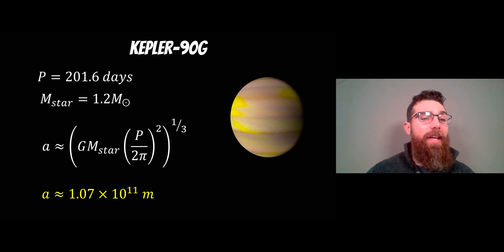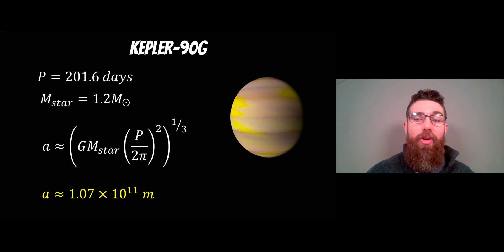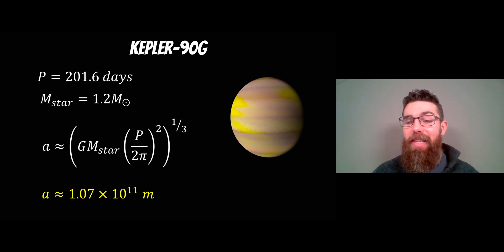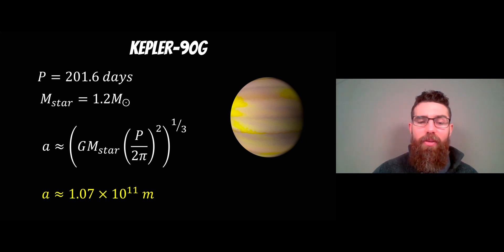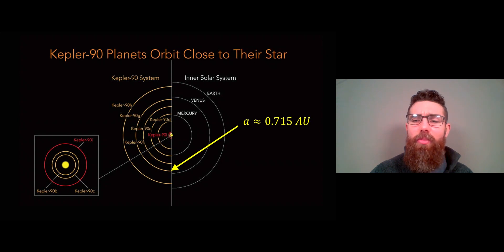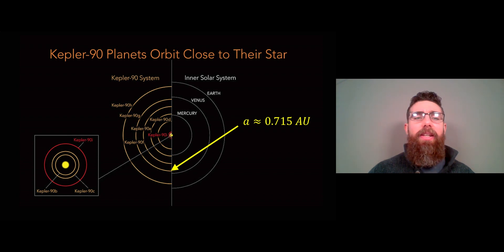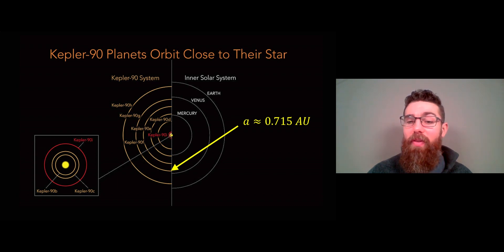For Kepler-90g, the orbital period was 201.6 days and the mass of the star was calculated to be 1.2 solar masses. Putting that into our equation, we get a semi-major axis of 1.07 × 10¹¹ metres. Converting to astronomical units — where one AU is the distance between the Earth and the Sun — we find that Kepler-90g has a semi-major axis of 0.715 AU.